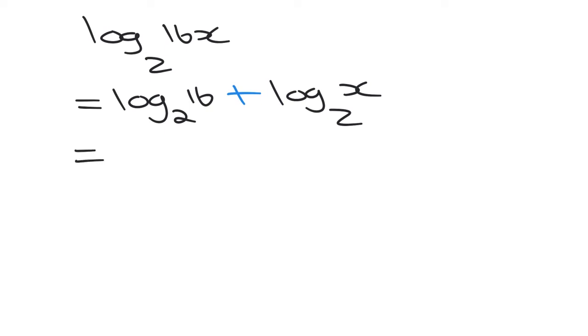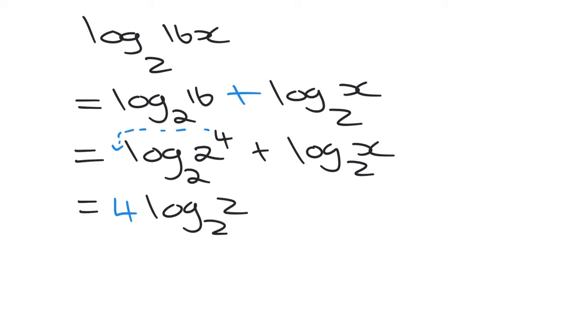Well, what does this give us? We now have the log. We want to write the 16 as a 2 to the power of something in its prime factored form. So this is going to be 2 to the power of 4 base 2, add log x base 2. Now what we learned is that this 4 is going to go all the way this side. So this is going to be 4 log 2 base 2 add log x base 2.